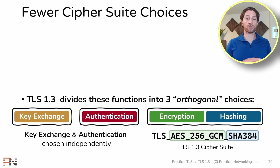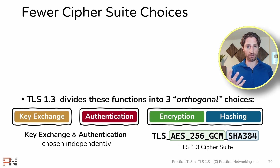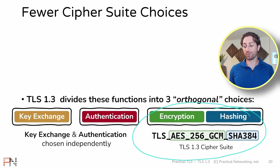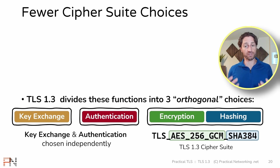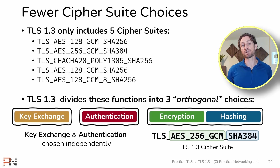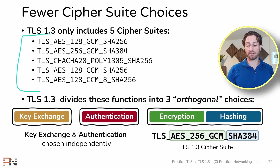The third change is that there are far fewer cipher suites in TLS 1.3. In TLS 1.2, since a cipher suite specified a single protocol for four security services, we had to have a new cipher suite for every unique combination of four protocols. In TLS 1.3, since cipher suites are simplified, we only need a cipher suite for each combination of symmetric encryption and hashing algorithms that are supported. Since far fewer are supported, in TLS 1.3 there are only five cipher suites that exist, as of the time of this recording from the TLS 1.3 RFC. This means we no longer have to look through a list of 300 ciphers — we only have to choose from five.